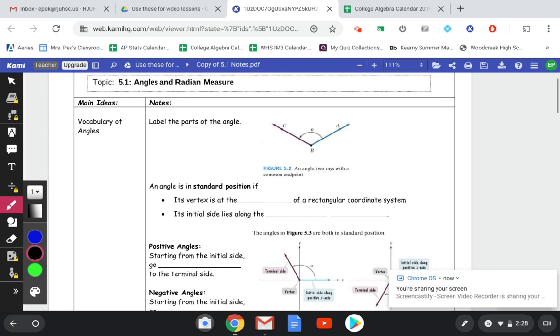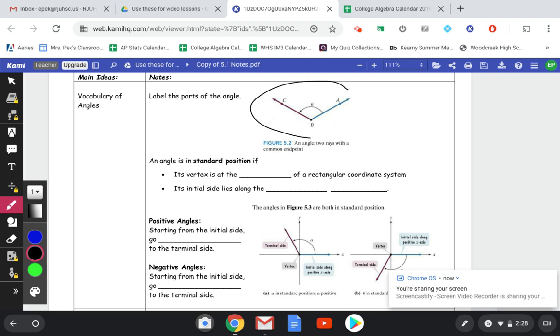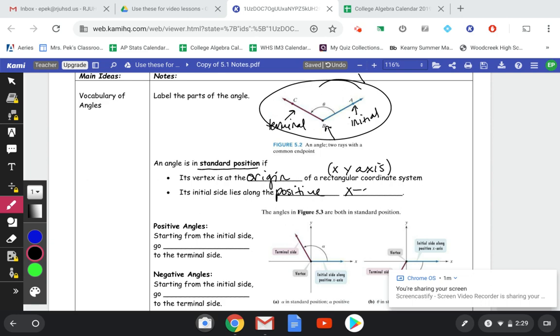Alright, so we're gonna start today with angles and radian measure of angles. We have a basic angle here. We have the vertex, which is this point at B. We have our initial side, which is that one, and then our terminal side, which is this one. An angle is in standard position if the vertex is at the origin of a rectangular coordinate system, that just means an XY axis. And the initial side has to be on the positive X axis. That's when you know your angle is in standard position.